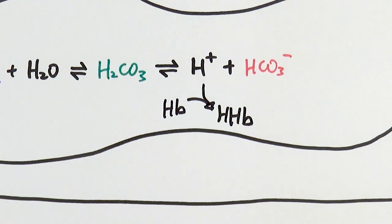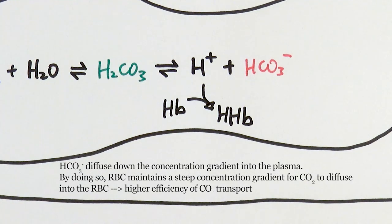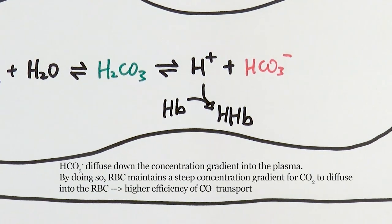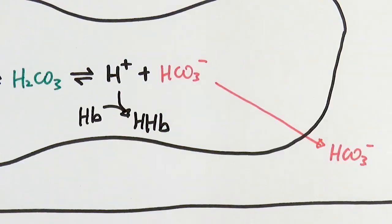The hydrogen carbonate ions could technically stay inside the red blood cell, but that would increase the concentration inside. If we don't remove them, the red blood cell would become saturated with hydrogen carbonate ions and we could no longer transport more carbon dioxide inside. So in order to maximize efficiency, the hydrogen carbonate ions are transported outside the red blood cell and into the plasma.